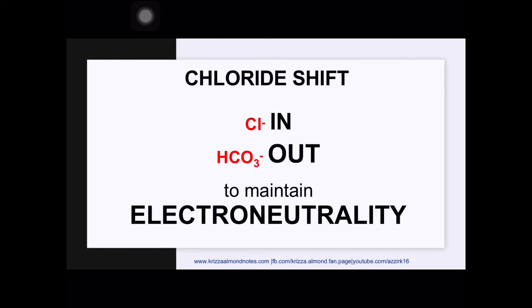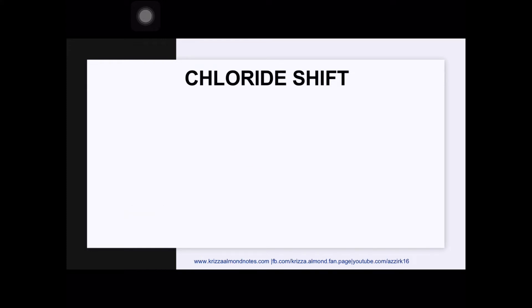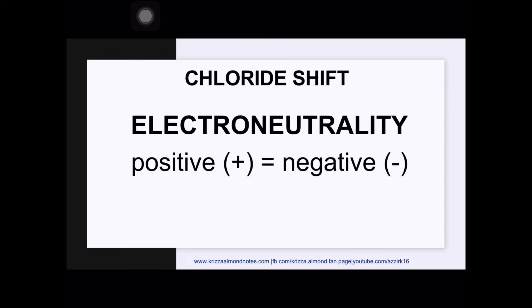Chloride shift is just one of two ways by which chloride maintains electroneutrality. What is electroneutrality? Electroneutrality refers to the same number of positively charged ions and negatively charged ions on each side of the red cell membrane.